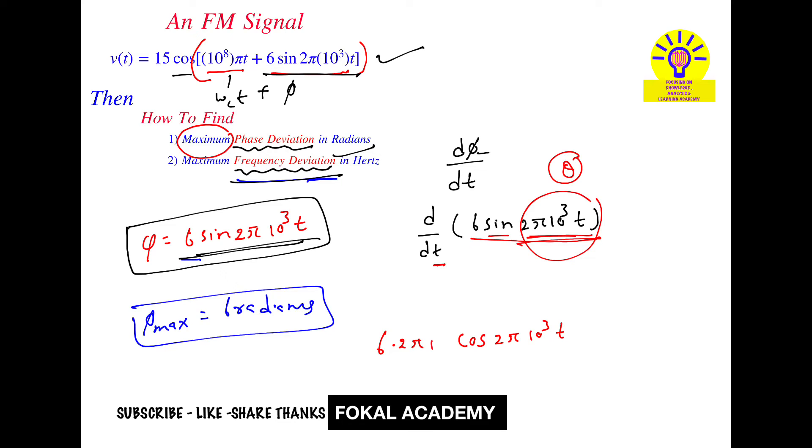We get 2π × 10³. So this is dΦ/dt. The maximum value is the maximum frequency deviation: dΦ/dt = 6 × 2π × 10³ radians per second.